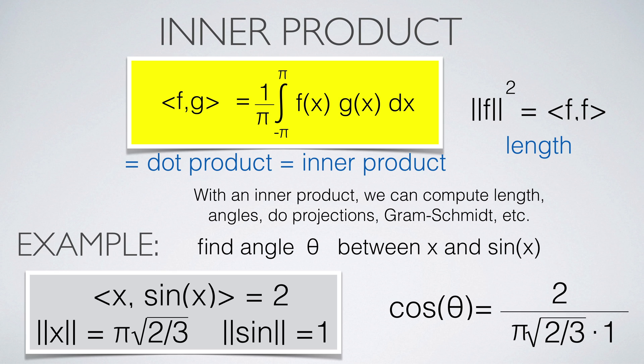As a geometric problem, let's find the angle between the two functions x and sine of x. We use the familiar formula for the cosine of the angle. The inner product of the two functions is equal to 2. The length of the two functions can be computed too. From this we can get the cosine of the angle theta.